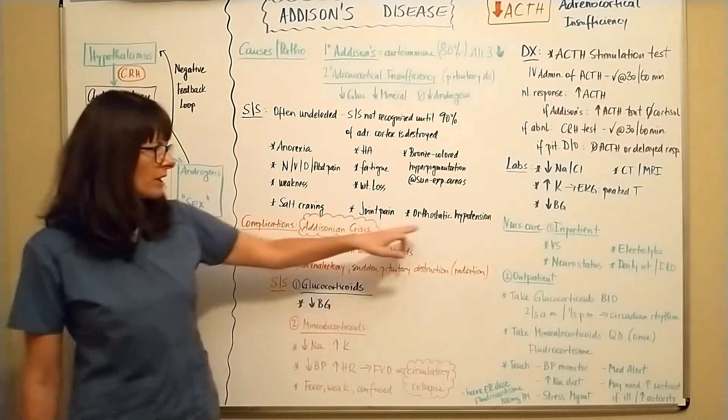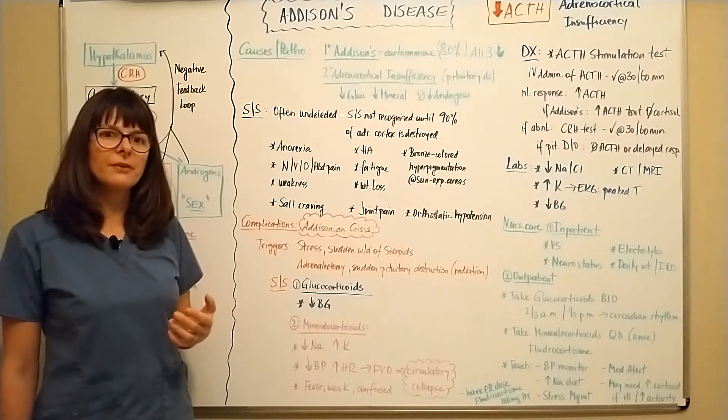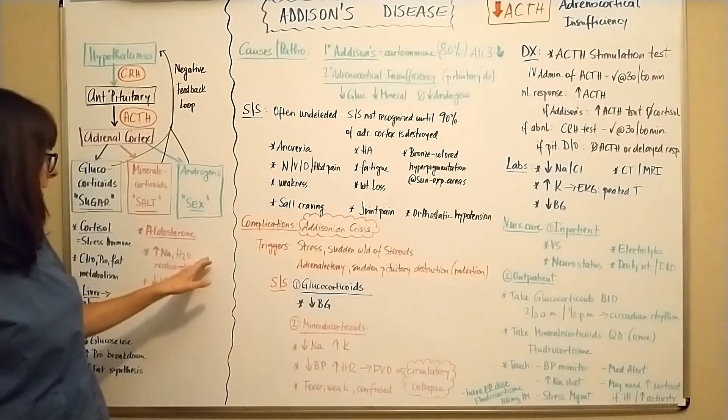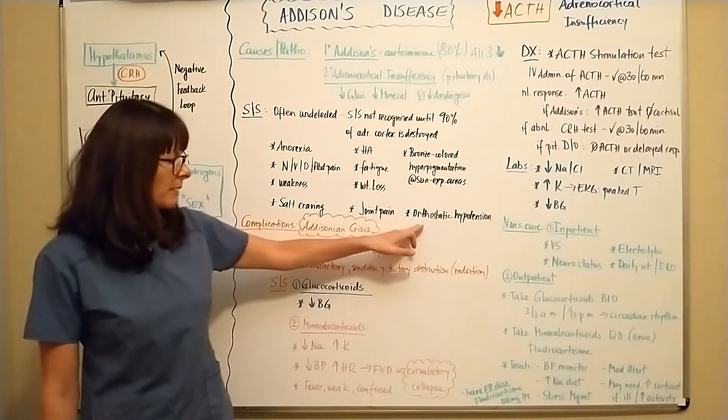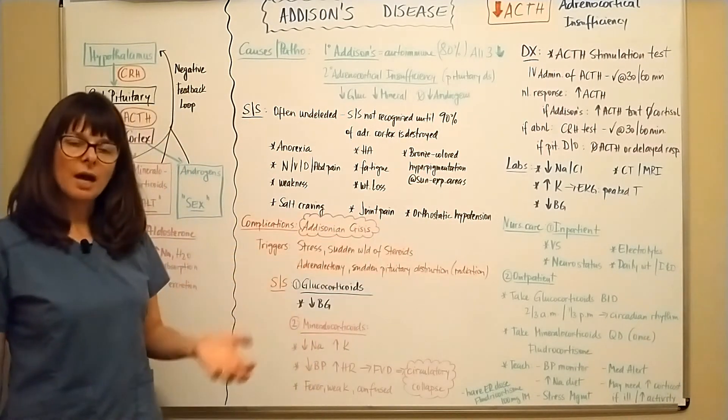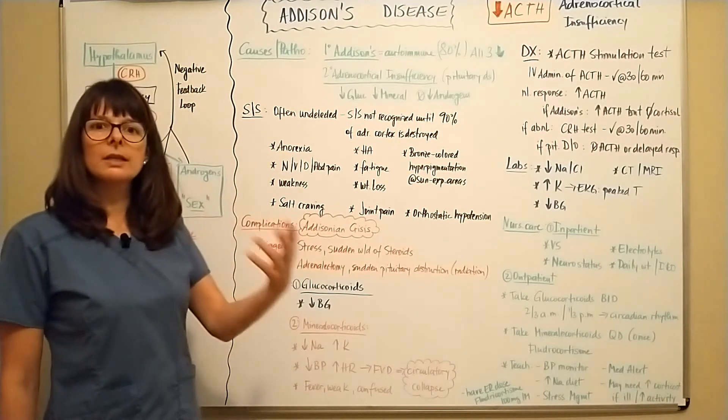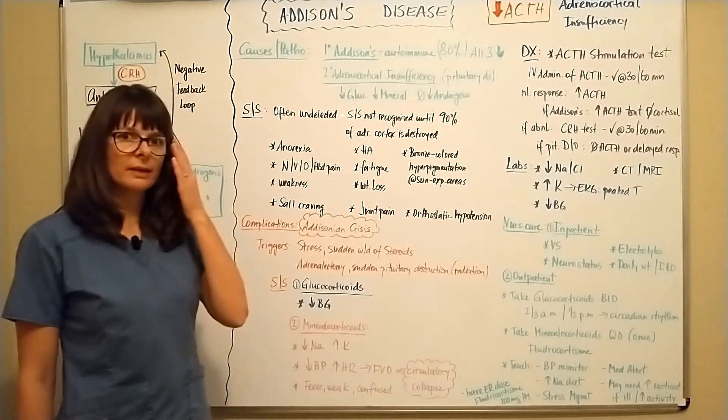and then a very significant finding bronze colored hyperpigmentation at sun exposed areas, as well as orthostatic hypotension. And these here salt cravings and orthostatic hypotension can certainly be due to a lot of other disorders, but salt cravings here happens because we're now not able to preserve the salt and orthostatic hypotension because with being unable to preserve the salt and water, it'll lead to fluid volume deficit. Therefore, the patient can have orthostatic hypotension.